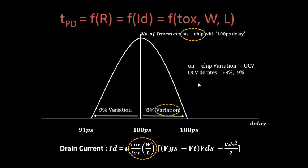When this on-chip variation is combined and clubbed together, you get the term OCV — on-chip variation. The terms used to represent this are called derating factors, or OCV derating factors. In this case the derating factors are +8% and −9%. These derating factors are used in your STA — static timing analysis — tool. How they are used in timing reports will be covered in a separate section. This concludes our discussion on on-chip variation.